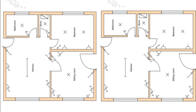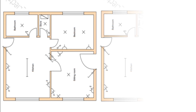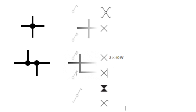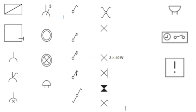you first of all must have an understanding of some basic electrical symbols, because every electrical drawing is made up of lines and symbols. We have the lines that represent the wires or cables in the wiring, and then we have symbols that represent all the electrical components or devices that we'll be using in the drawing.